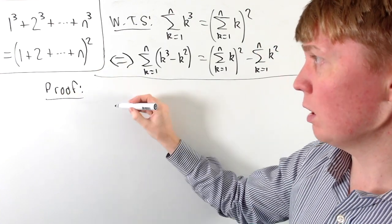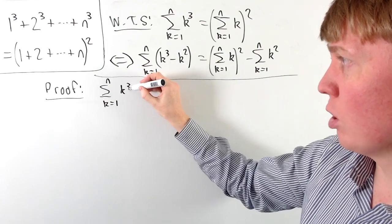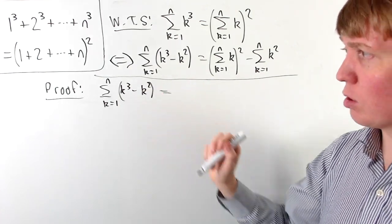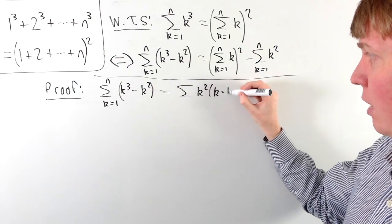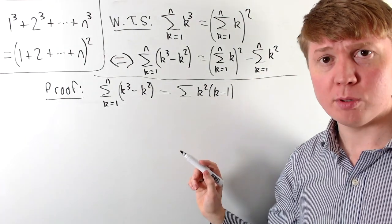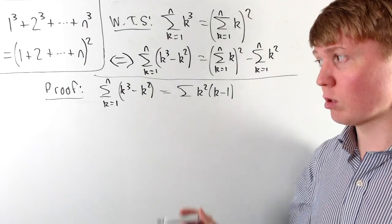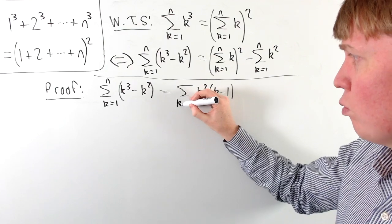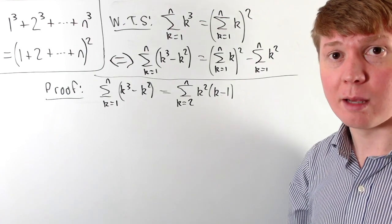Starting with the left hand side, we have the sum from k equals 1 up to n of k cubed minus k squared. The first step is to factorise this expression, giving the sum of k squared times k minus 1. We can also notice that when k is 1, k cubed minus k squared is just 0, so we can remove the k equals 1 term without changing the value of our sum. We now write this as the sum from k equals 2 up to n of k squared times k minus 1.